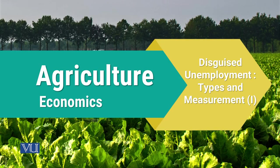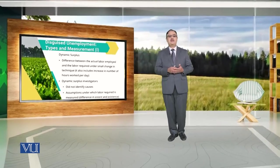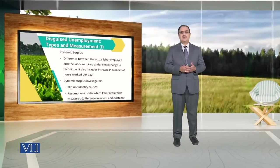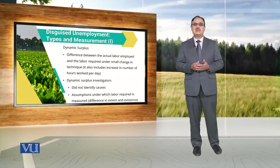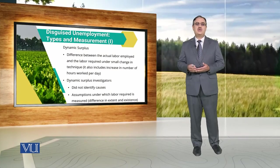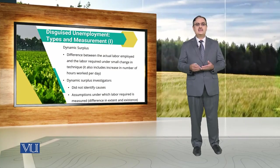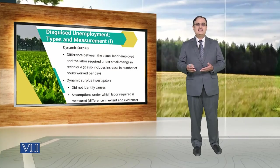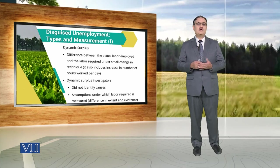Disguised Unemployment: Types and Measurement. When we talk about disguised unemployment, we can measure it under dynamic surplus. Dynamic surplus is basically the difference between the actual labour employed and the labour required under small changes in technique of production.